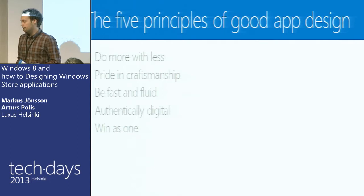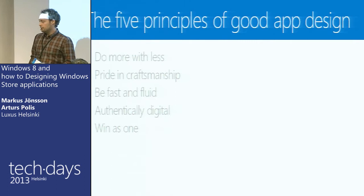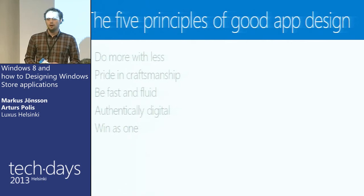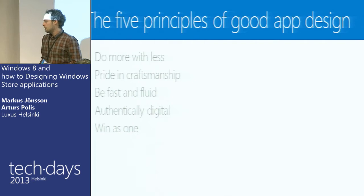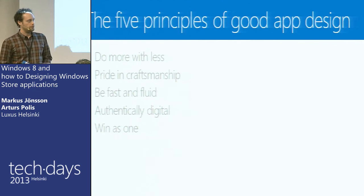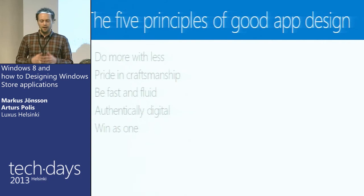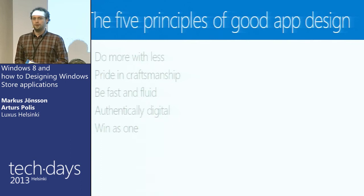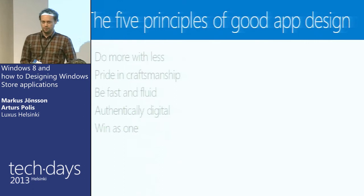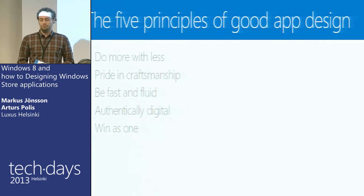The five principles are: do more with less, which basically means to focus on your content and get rid of the unnecessary Chrome — the thing that distracts the user from taking in the content you're trying to convey. We have pride in craftsmanship, which is about the alignment of items in the grid of your application so that the user can feel at home and easily scan for the stuff that really matters. It also contains the fonts. We have the Segoe UI font, which is the default in Windows 8 — a great-looking, really clean font that should be used to the maximum, rather in big sizes, so it's easy to find what you're looking for.